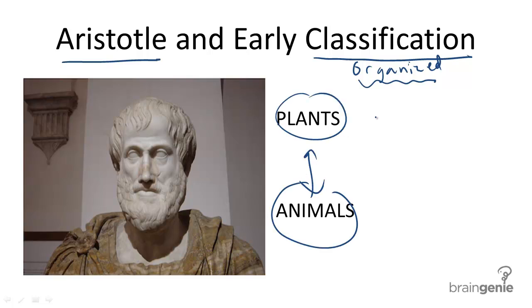But without a microscope to see much of any other life on the planet, he only formulated two categories of living things to fall into: plants and animals.